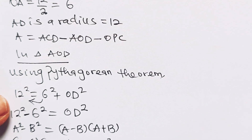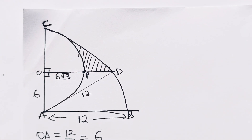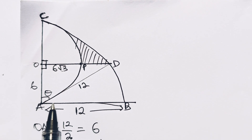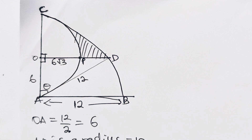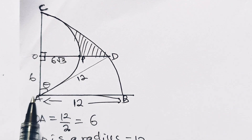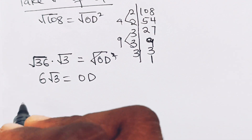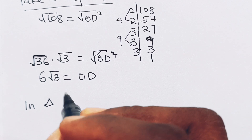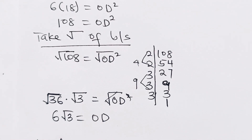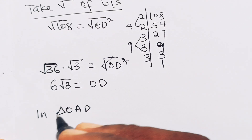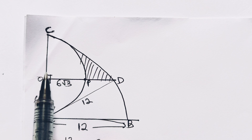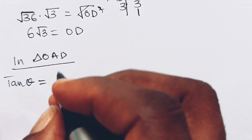Now we need to find angle theta. Using tan in triangle AOD: tan θ equals opposite over adjacent, which is 6√3 divided by 6, giving tan θ equals √3. Therefore theta equals 60 degrees.